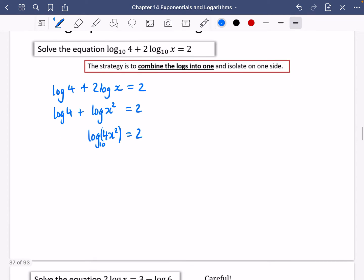Now remember, this is a base of 10. So this statement then says we're saying the power of 10 that gives me 4x² is 2. In other words, 10², which is 100, is equal to 4x². Divide both sides by 4. So 25 is equal to x². And then square root both sides. So the square root of 25 is plus or minus 5.